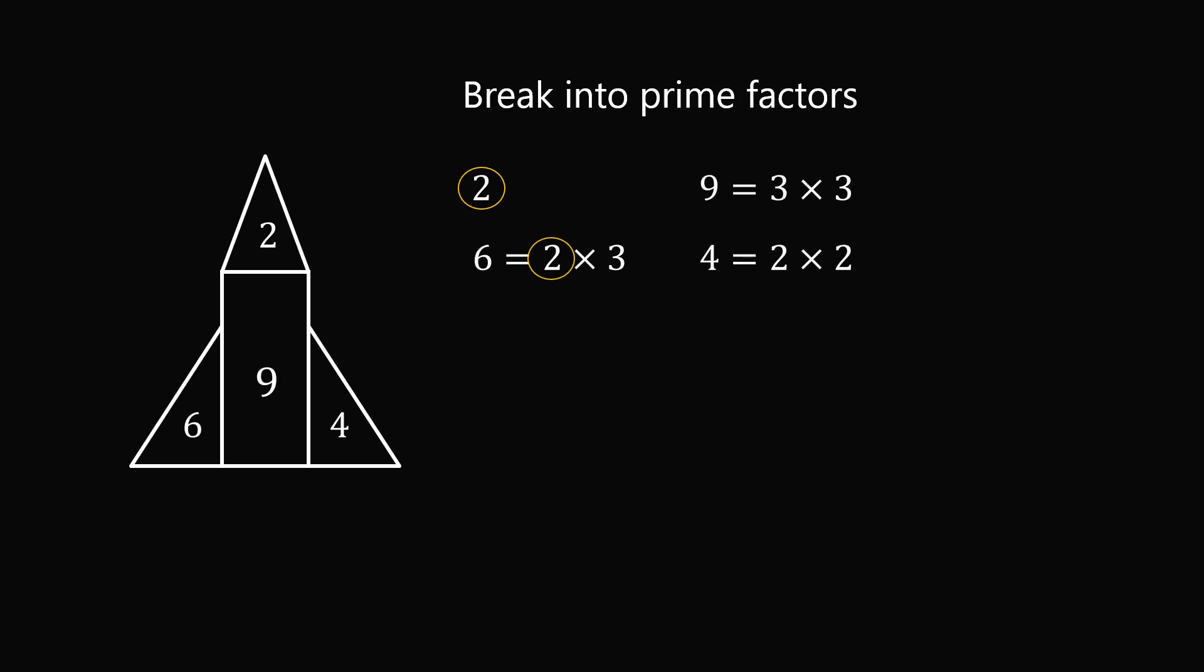So we have 2, 2 on the left hand side, and we have 2, 2 on the right hand side. But then we have one factor of 3 on the left, and we have two factors of 3 on the right. So somehow we need to generate an extra factor of 3.